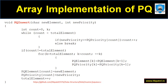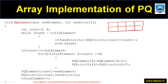Now let's look at insertion programmatically. Assume we already have priorities one, two, four, five with elements A, B, C, D. We wish to add element E with priority three somewhere in between. We need to find the proper place for it. We start a counter variable at zero and check where E should be inserted.